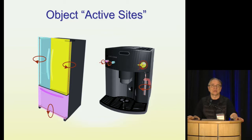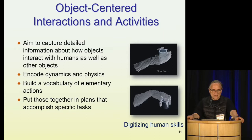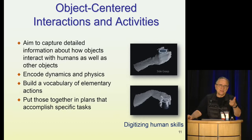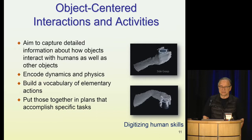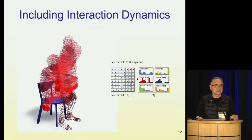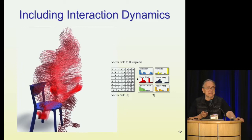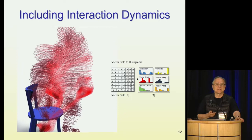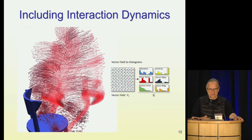The overall goal is to capture detailed information about how objects interact with humans — and also objects with objects — and encode more than just a keyword. We want to talk about the physics and dynamics of the interaction and build a vocabulary of elementary actions out of which more complex plans can be put together. The high-level goal here is how to digitize human physical skills. We are increasingly interested in encoding the dynamics of interactions — essentially taking the moving object, replacing it with a particle cloud, and looking at the statistics of this particle cloud moving as a way to represent the interaction. We build these descriptors that allow us to compare and contrast different interactions.